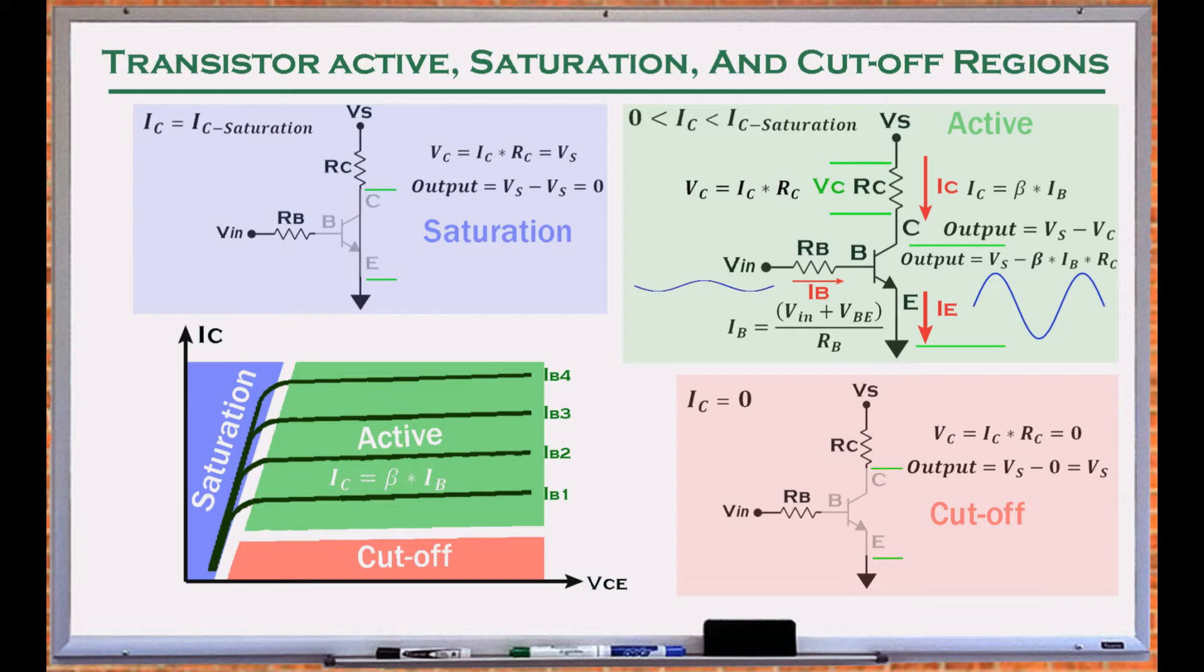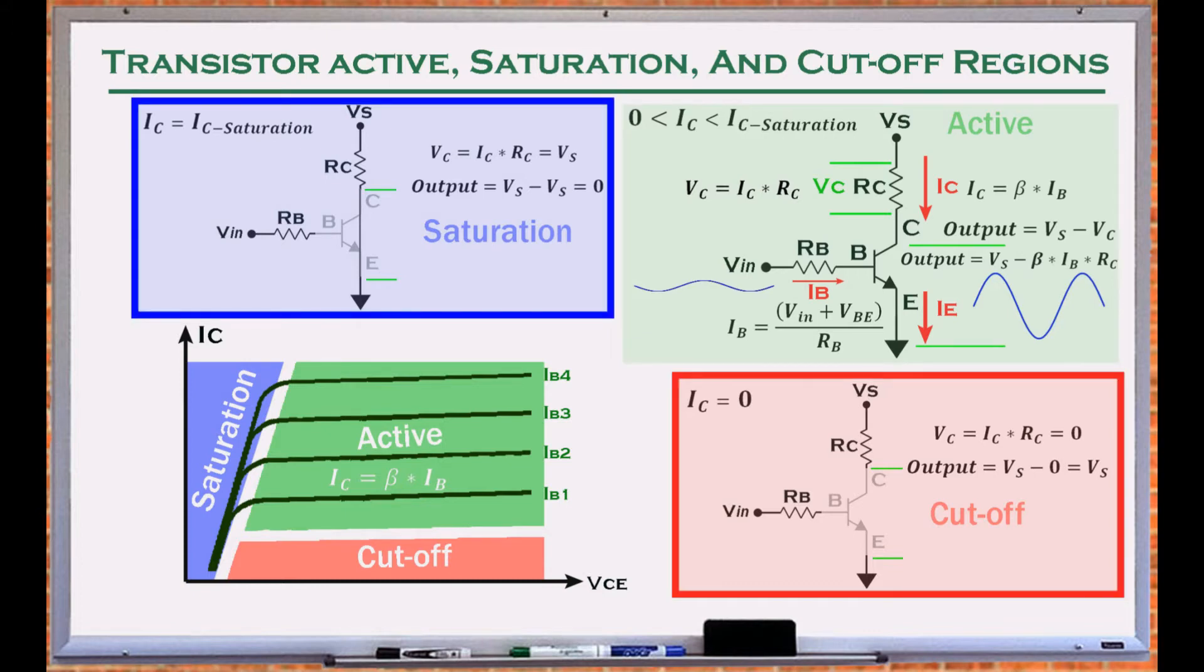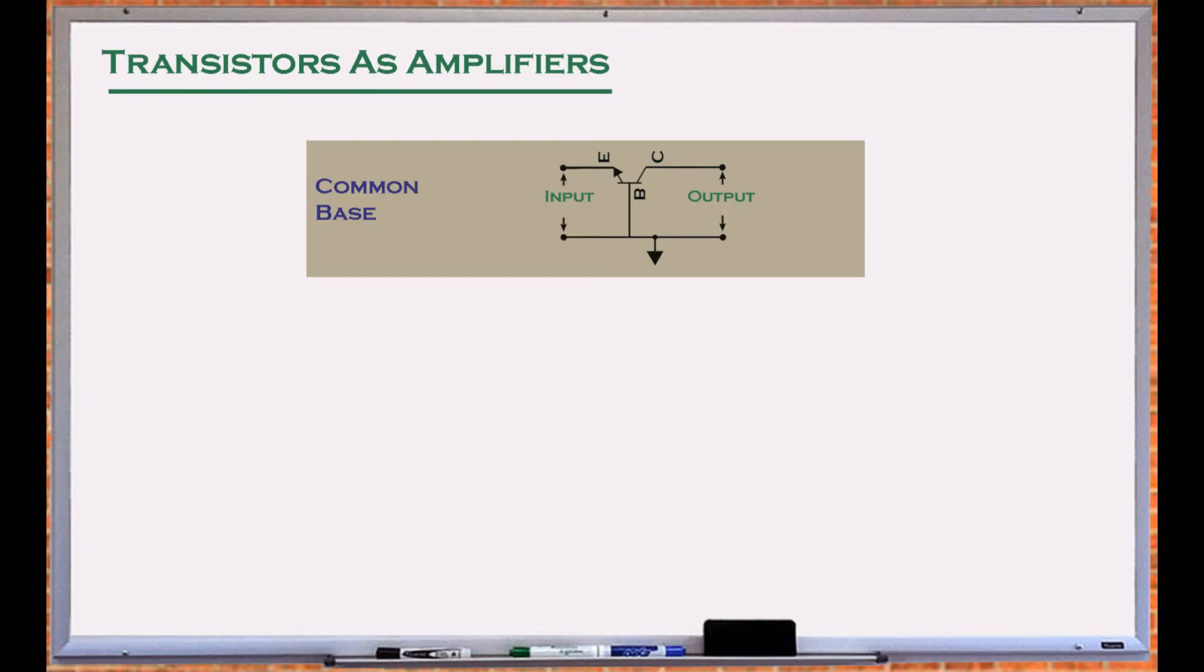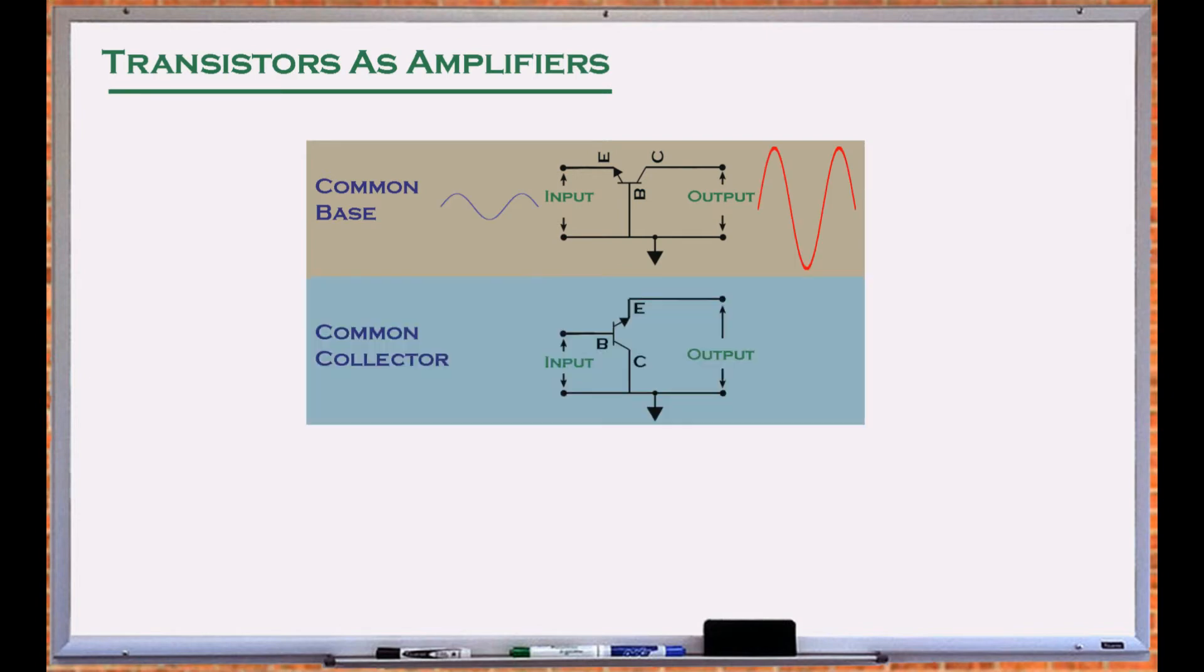The behavior of a transistor allows it to function as a signal amplifier in its active region, and a switch in the saturation and cut-off regions. There are three configurations to use a transistor as an amplifier: the common base to amplify voltage, the common collector to amplify current, and the common emitter to amplify both the current and voltage that are applied to the transistor.